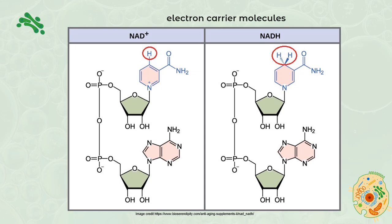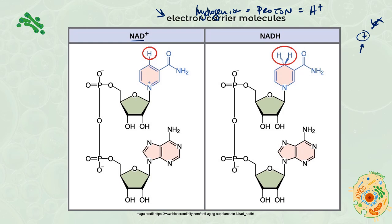This molecule is known as NAD, or nicotinamide adenine dinucleotide — you just need to know NAD. It's commonly known as an electron carrier molecule, though that's not a super fabulous name because it also carries hydrogen ions. Those hydrogen ions we sometimes refer to as protons, which makes sense because a hydrogen atom has one proton and one electron. If we steal its electron to turn it into an ion, all that's left is the proton. So hydrogen ions, protons, and H+ are all the same thing.